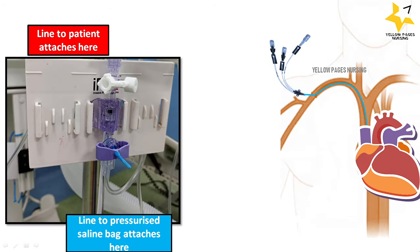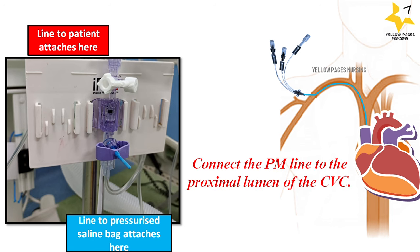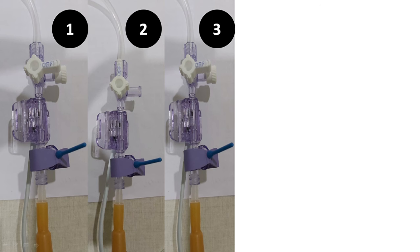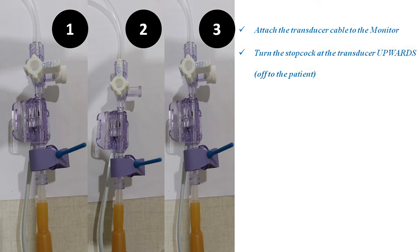Identify the proximal lumen of the central venous catheter and scrub the port with an alcohol swab. Connect the PM line to the proximal lumen of the central venous catheter. Attach the transducer cable to the monitor. Turn the stopcock at the transducer upwards, off to the patient, as shown in picture 2. Remove the cap at the transducer so the tubing is open to air. Hit zero on the monitor, then replace the cap. Turn the stopcock at the transducer horizontal, off to the atmospheric air, as shown in picture 3.